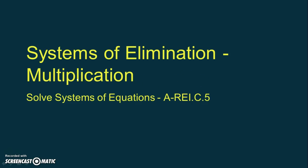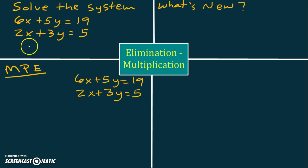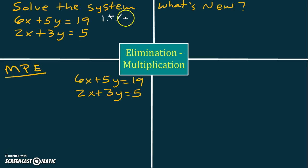Today's video is going to cover solving systems of equations using elimination by multiplying first. You can see in the upper left box we've got a systems problem and it's asking us to solve. If we're going to solve the system using what we already know, what we would first do is add or subtract the equations to eliminate one of the variables. So let's go ahead and try adding and see what happens.